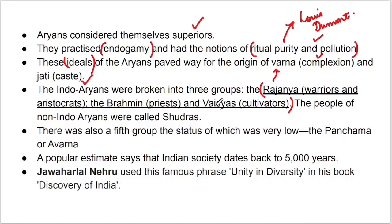There was also a fifth group whose status was very low. In the time of the Aryans, this fifth group with the lowest status was called Panchama or Avarna. A popular estimate says that Indian society dates back 5000 years. These are important facts. I have included only important, exam-oriented things in this PPT.